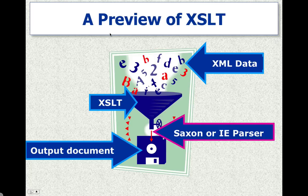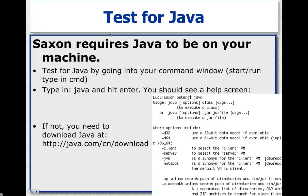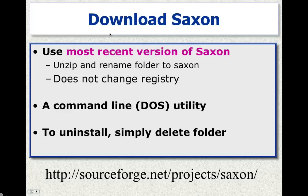In order for Saxon to work, Java is required to be on the computer. You can test to see if you have Java in Windows by hitting the Start button, Run, and then type in CMD for command. Type in Java and hit Enter and you should see a help screen. If you see this then you know Java is installed. If you don't have Java installed, you can go to java.com and download either the Java JDK or just the runtime environment, which is the JRE.